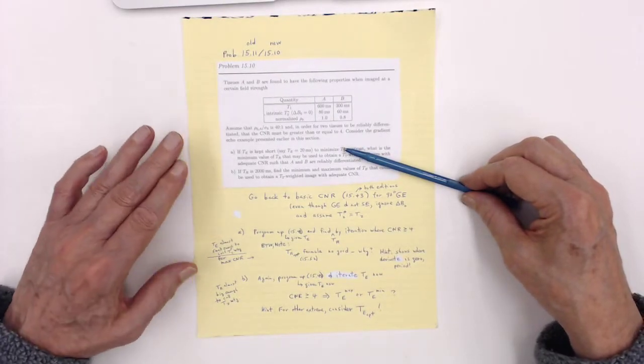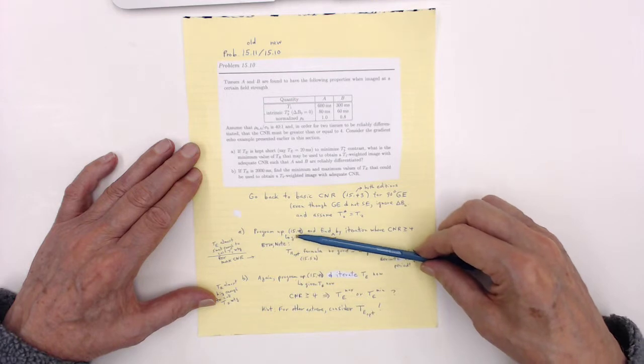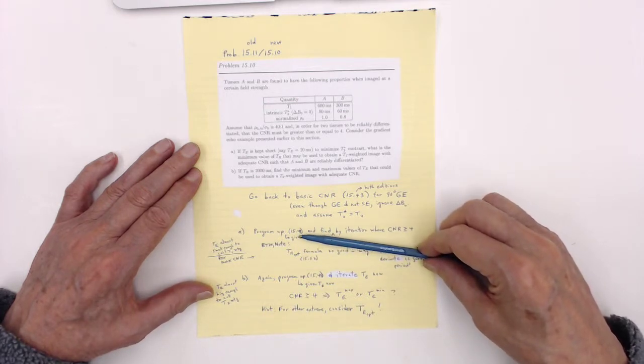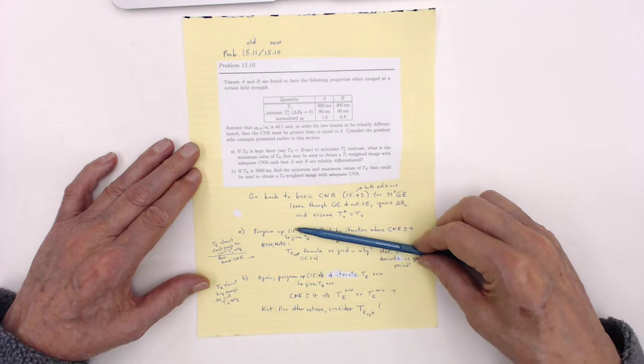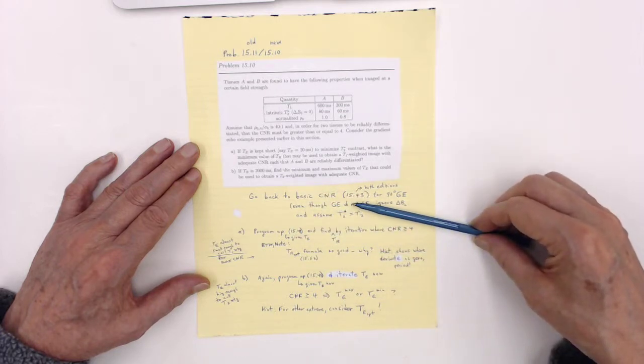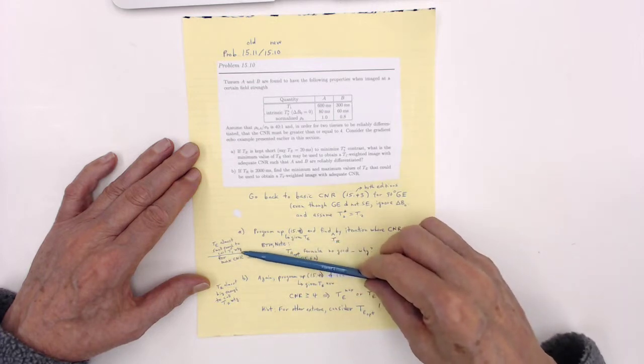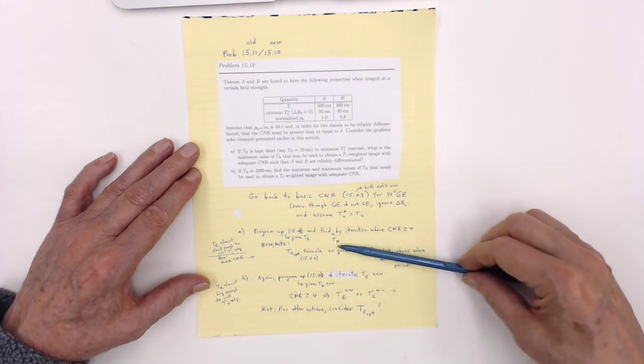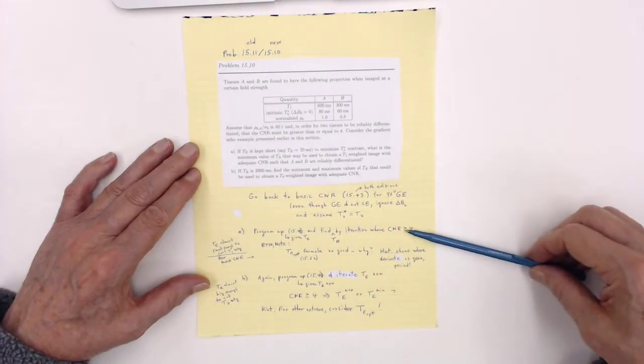Well this is just a question of programming up one equation and then just looking at it for different parameters. In Part A, we just have the basic formula here that I mentioned. And TE is fixed and TE is almost small enough to call it T1 weighting and then iterate TR. Just move TR and find out where CNR is four.